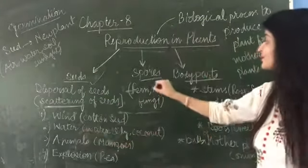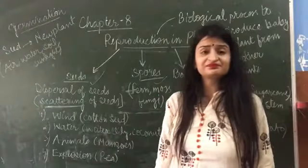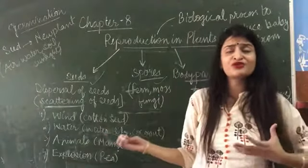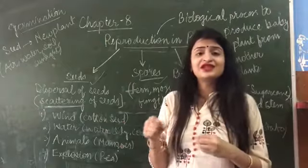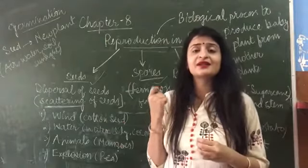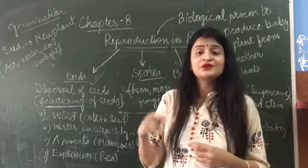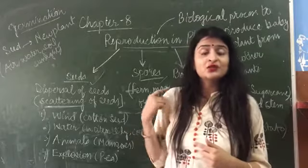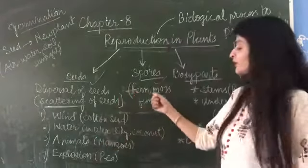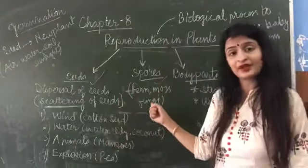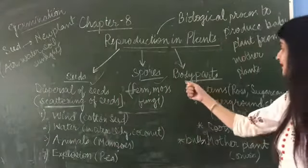The next method is spores. Spores kya hootay hain? Spores are single cells found inside the leaves of certain plants, through which those plants reproduce. Examples include corn, moss, and fungi.